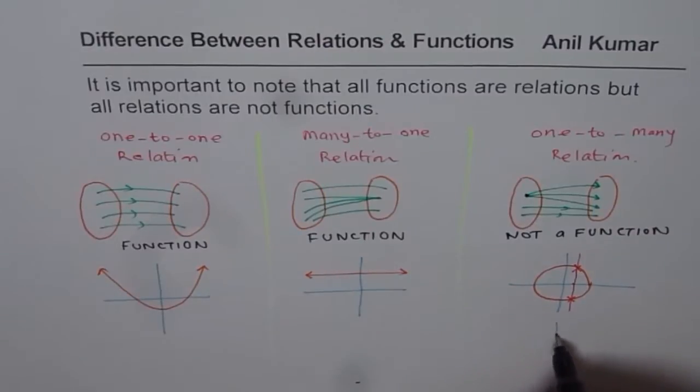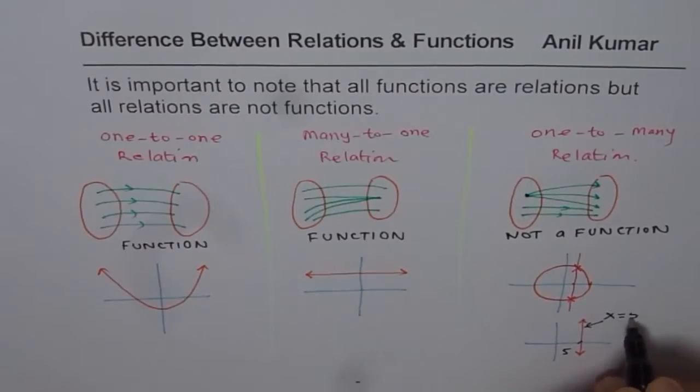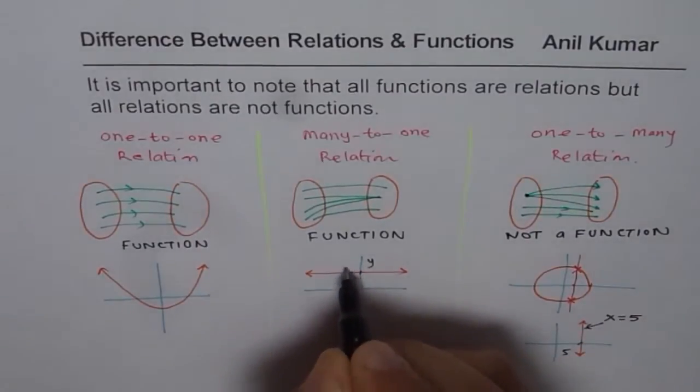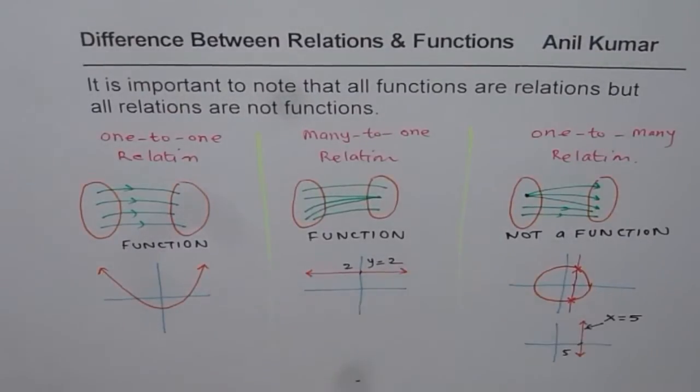Another very popular example, in this case, will be a straight line, vertical straight line. Let us say this point is 5. Then, the straight line equation will be x equals to 5. In this case, if this point is, let us say, 2.